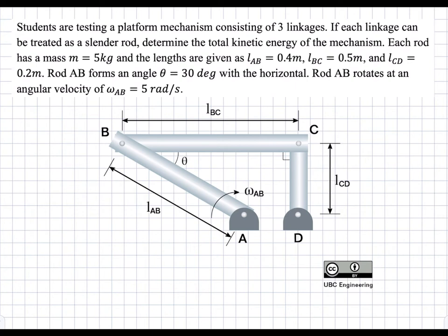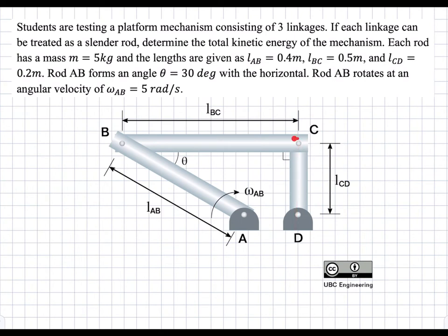In this problem, we're asked to find the total kinetic energy of a mechanism that has three cylinder rods. We're given the initial omega of AB, and the system is constrained in the following way. Since we're given omega AB and need to find the kinetic energy, we need to find omega for each section, because that's how you find kinetic energy — we need the velocities or angular velocities. We start with omega AB, find velocity of B, then find velocity of C and omega BC, and then omega CD with VC.